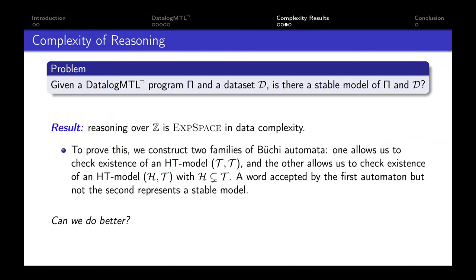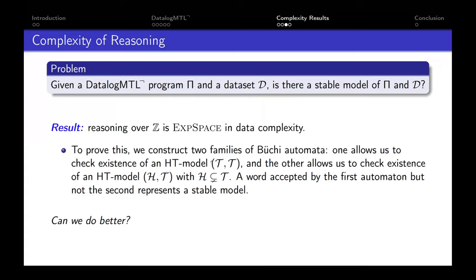For the integer timeline, we showed that reasoning is EXPSPACE in data complexity. To show this, we use Büchi automata very similar to those used for the positive case. We use a first Büchi automaton to check for an HD model of the form TT, and a second Büchi automaton to check for an HD model of the form HD with H strictly smaller than T. A word accepted by the first automaton but not the second represents a stable model. However, checking non-acceptance of the second automaton requires automata complementation, which causes an exponential blowup — this is why we get EXPSPACE instead of PSPACE.